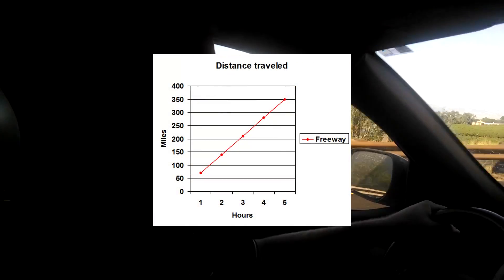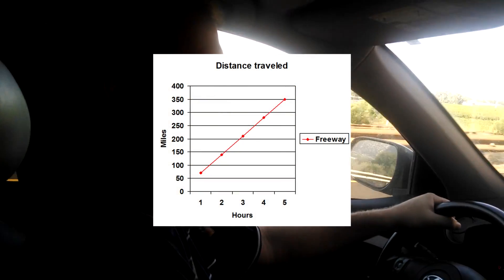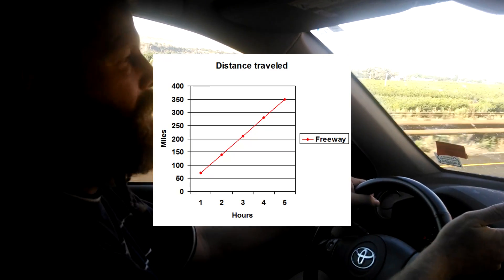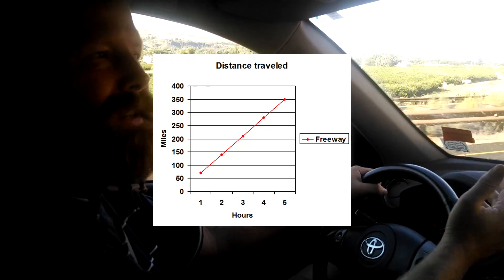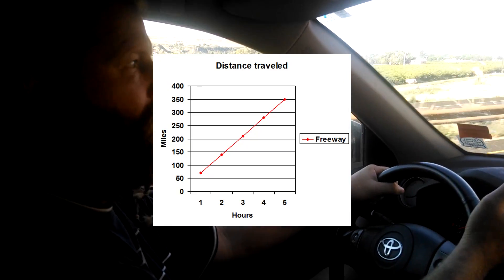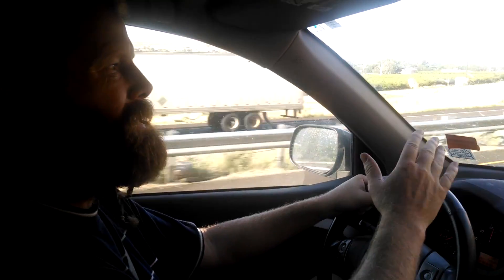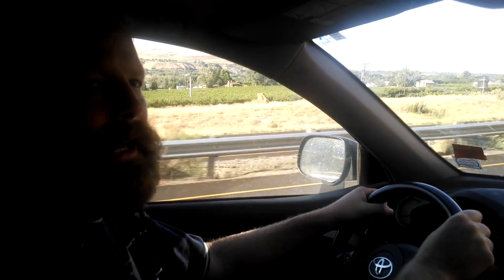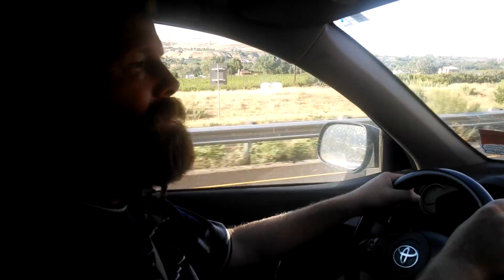Now, with that example, you would notice that it's important that we keep the speed constant if we want to see the direct proportionality between distance and time.